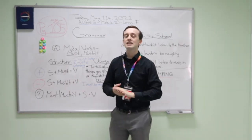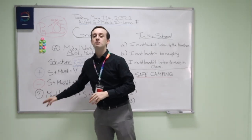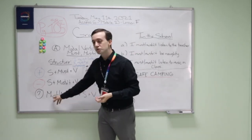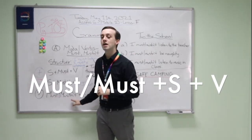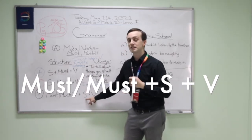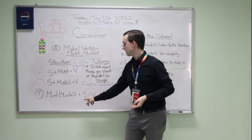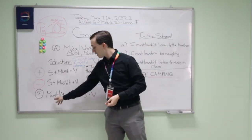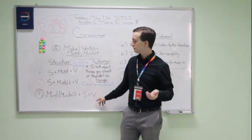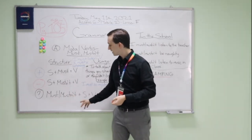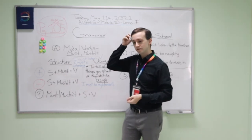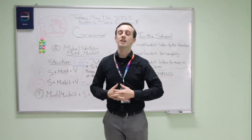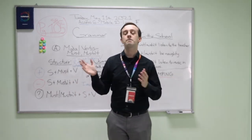Finally, to make a question with must and mustn't, start with must or mustn't, then the subject — I, you, he, she, it — then the verb. For example: Must I talk? Or: Mustn't you run? Those are the structures of sentences with must and mustn't.